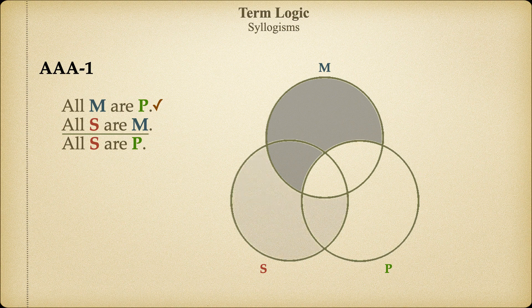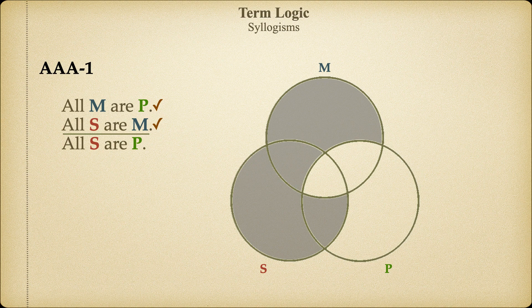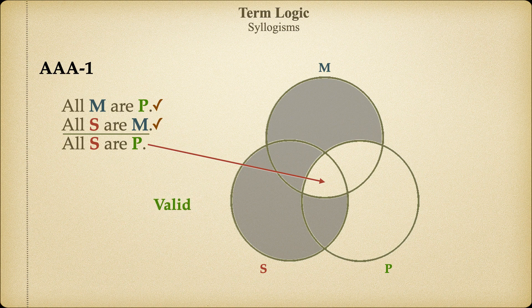Now let's move on to the minor premise. It tells us that all members of S are also members of M, so we've now eliminated everything in regions 5 and 6 as well. Region 2 was already empty because of the major premise. Now that we've entered the information from the minor premise, notice that regions 3, 4, and 7 are the only ones left. Does it follow necessarily that all remaining members of S are also members of P? We see that it does — this argument is valid.